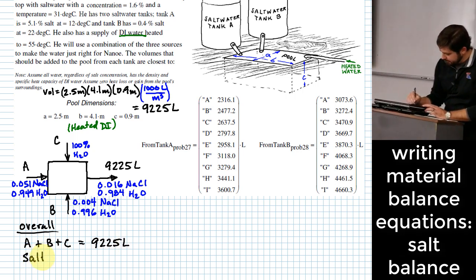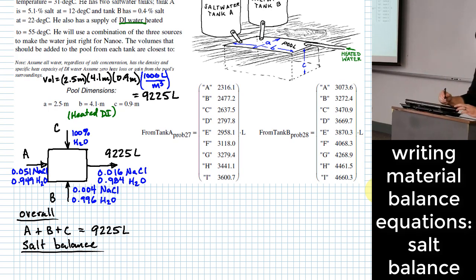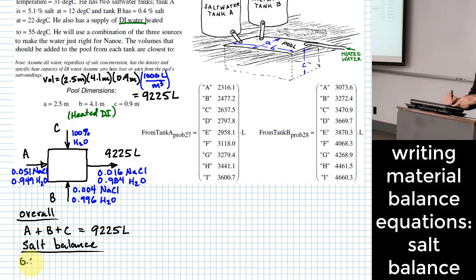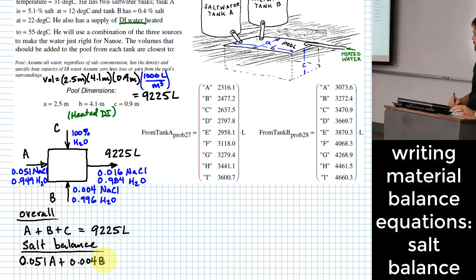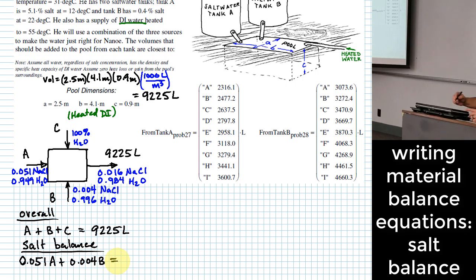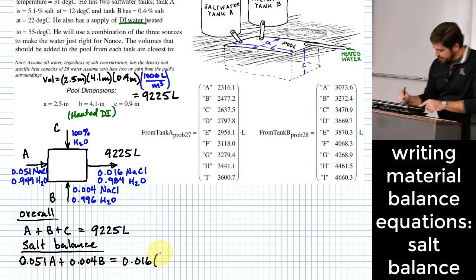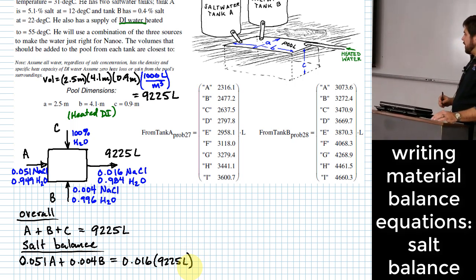What other balance can I write? Salt. What does that equation look like? So I have the content of salt in the A amount that I put in. And so that would be 0.051 times A plus 0.004 times B. We don't have any salt in the C component that comes in. So I'll just leave it out. And what about what we get out of the system? 0.016 times 9225 liters. So there's two equations.